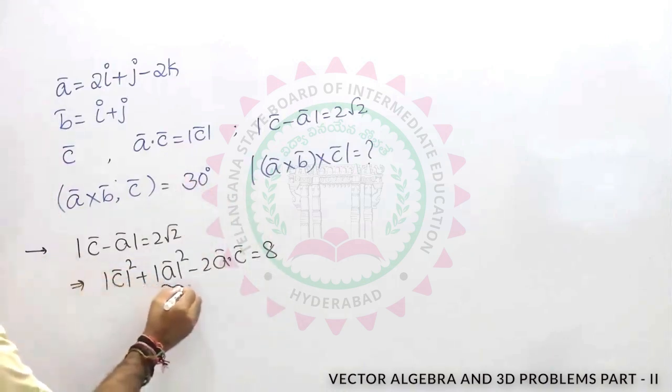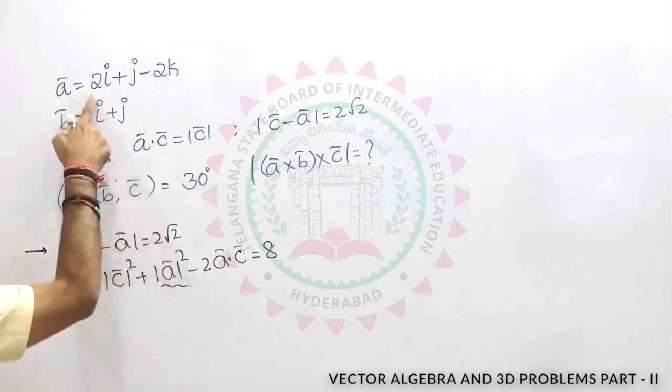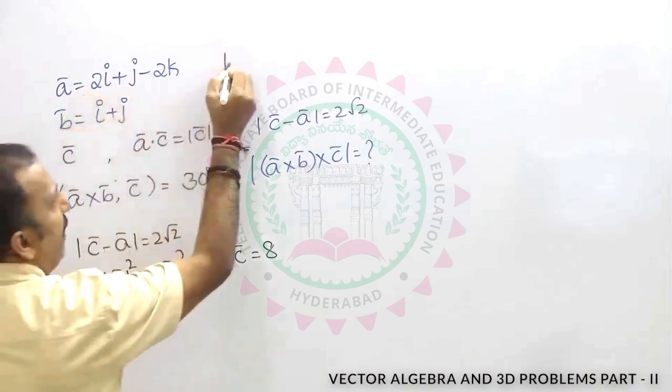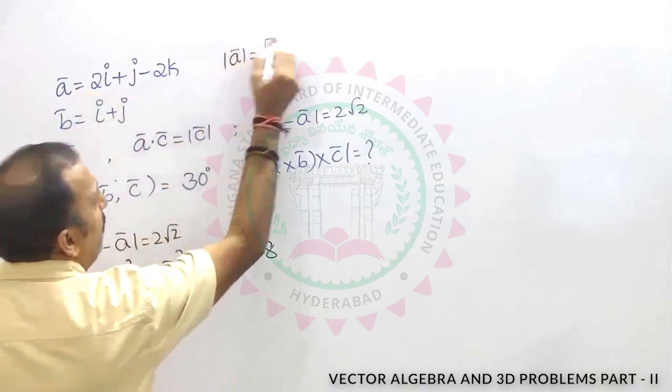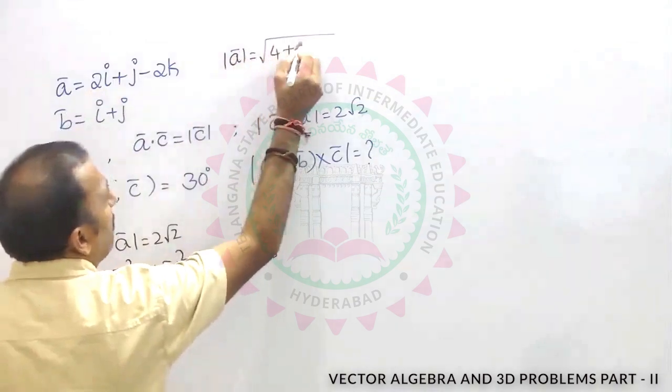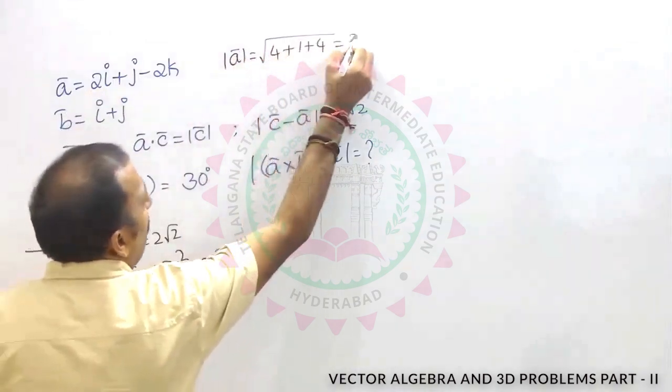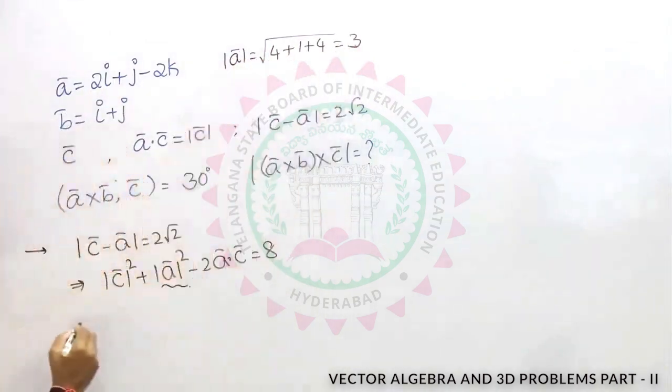What is mod a square? Here, mod a is equal to root of 4 plus 1 plus 4, which is equal to 3. So here, mod c square minus 2 into.